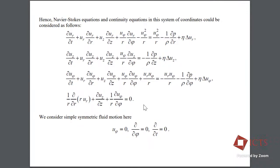I wouldn't like to stop here in detail because this is quite a well-known system of coordinates. I just want to highlight that eta here is viscosity — dynamical viscosity of fluid. Rho is the density. R is the radius. Everything else here is quite well known.